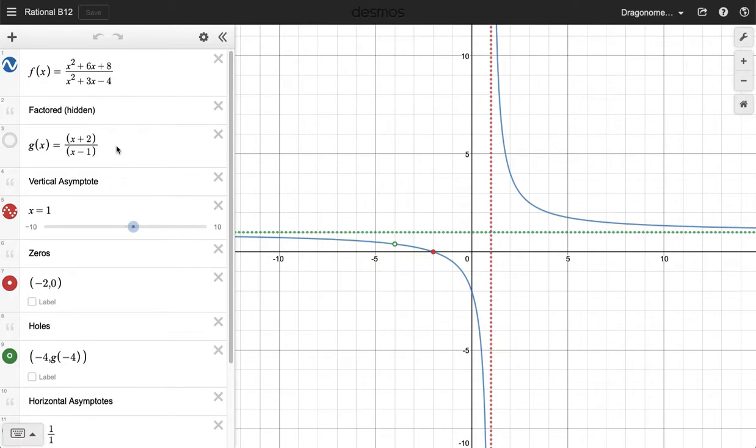From there, we get a lot of information. We find out that because we canceled x plus 4, there's a hole at negative 4. And we can plot that point down here in entry 9. We make a point negative 4 comma g of negative 4. We get a vertical asymptote because the denominator is 0 at x equals 1. So we can plot that line. Notice it's dashed here and it shows up in red on the graph.